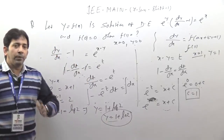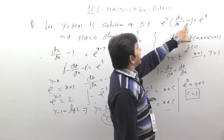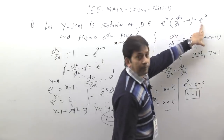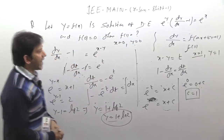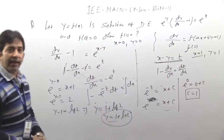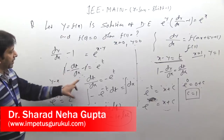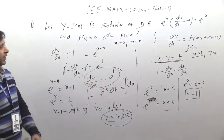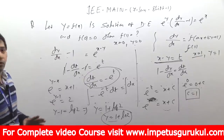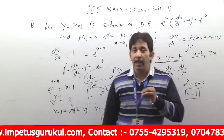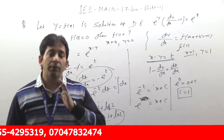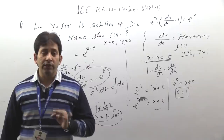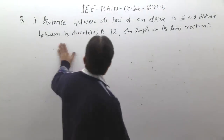The question was simply based on variable separable. The equation was e^y · (dy/dx) − 1 = e^x. Transferring e^x gave e^(x−y), letting x − y = t gave dy/dx, and after finding dt/dx the equation separated. We solved for t in terms of x, then found constant c using f(0) = 0 and finally computed f(1) = 1 + ln 2. Note this question. Next question.